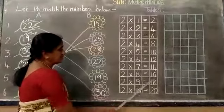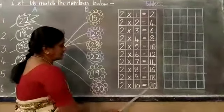2 sevens are 14. 2 eights are 16. 2 nines are 18. 2 tens are 20.